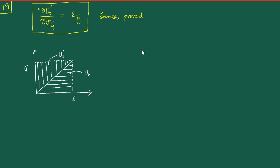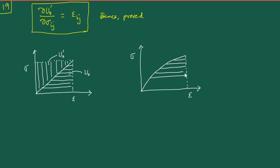Those textbooks also say that if we have a non-linear relationship between σ and ε, the same ideas hold. The area below the curve is still the strain energy density, and the complementary area is still the complementary energy density. In such a case it is clearly evident that u⁰ is not equal to u⁰' for a non-linear stress-strain relationship.